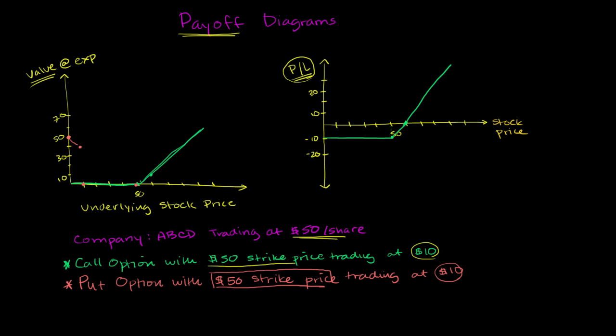So the value of the put option starts at $50 because you have the right to sell something that's worthless at $50 if the stock were to go bankrupt. And then at $50, the option doesn't really have any value anymore.